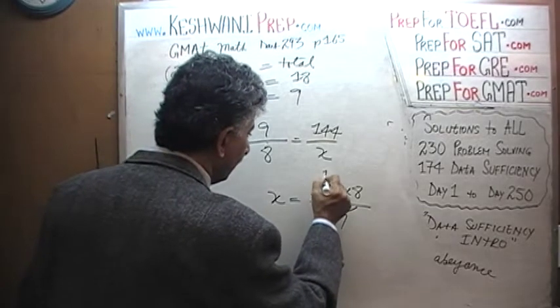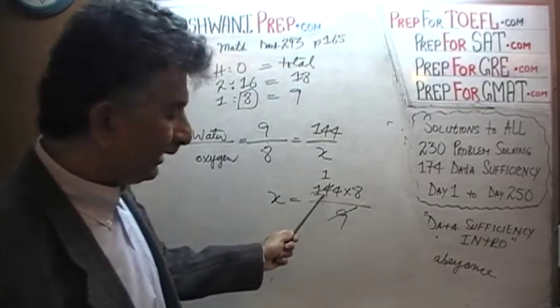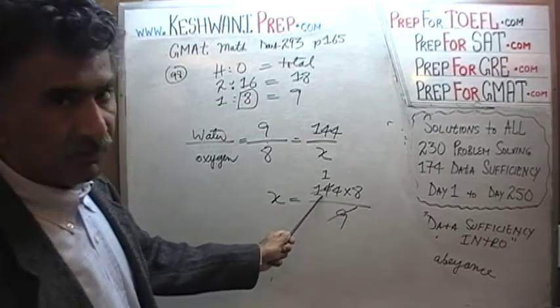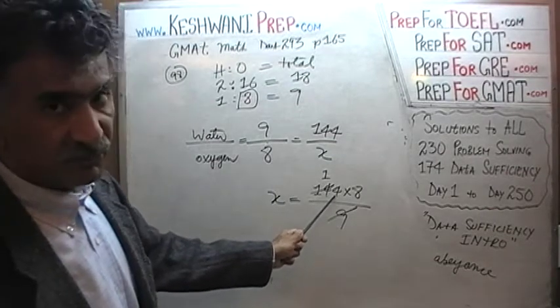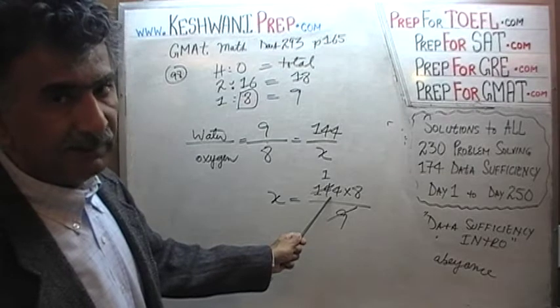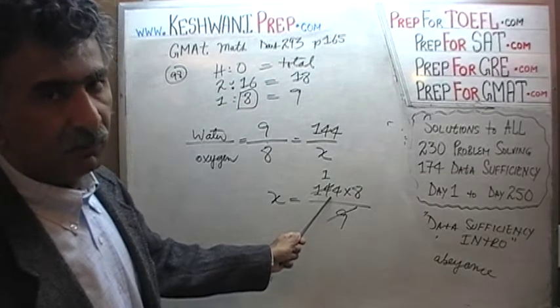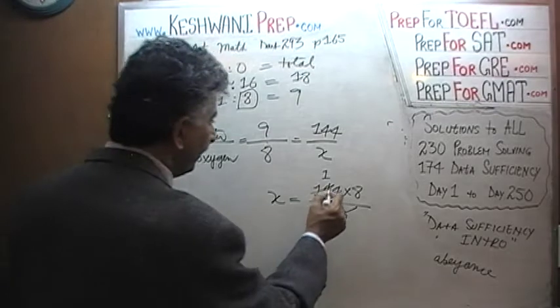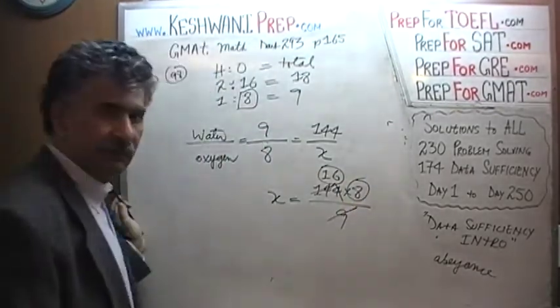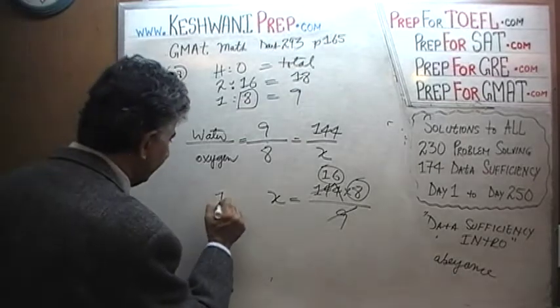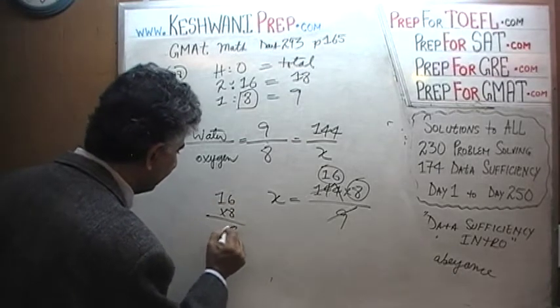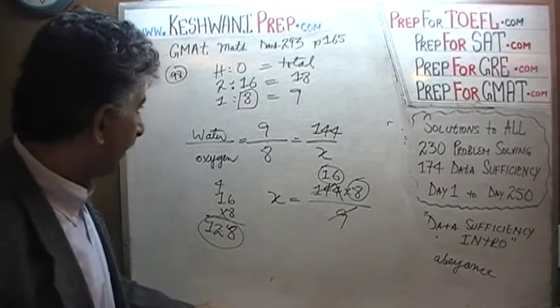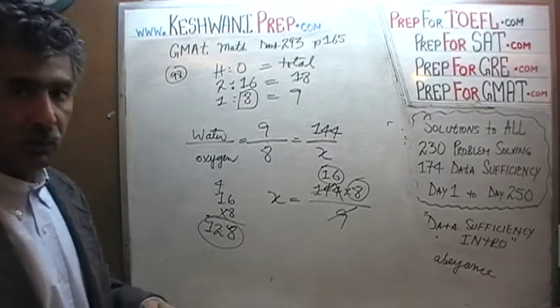Divide top and bottom by 9. How many 9s does 14 have? 14 has 1 nine. The remaining 5 is going to go and join this 4. After we take away 9 from the 14 we are left with 5. The remaining 5 goes and joins this 4 and becomes 54. How many 9s in 54? We know 9 fives are 45. So there must be 6 nines in 54. That's it. We are done. It's 16 times 8. 16 times 8 is 8 sixes 48. Carry 4 and 12. The answer is there are apparently 128 grams of oxygen in a total of 144 grams of water.